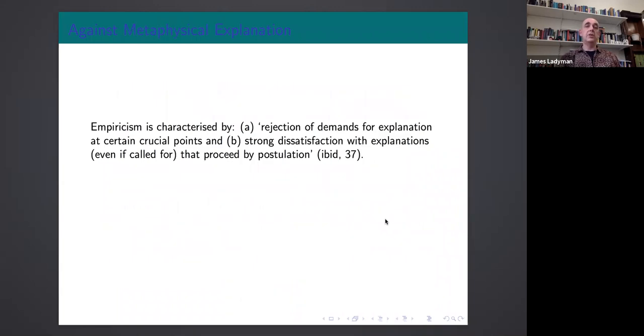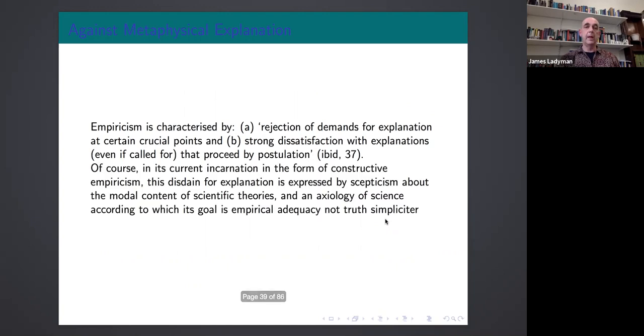So empiricism is characterized by a rejection of demands for explanation at certain points and strong dissatisfaction with explanations that proceed by postulation. In its current incarnation in the form of constructive empiricism, this disdain for explanation is expressed by skepticism about the modal content of scientific theories and an axiology of science—that is an account of what science's aims are—according to which its goal is empirical adequacy not truth simpliciter. So constructive empiricism is not an epistemology. Van Fraassen says very clearly Van Fraassen really has no epistemology. His epistemology is just don't be irrational, where irrational means violate the constraints of logic and the probability calculus with your beliefs at any given time. A very very weak notion of rationality that he has, and there's no positive account of warrant or evidence or anything beyond that.